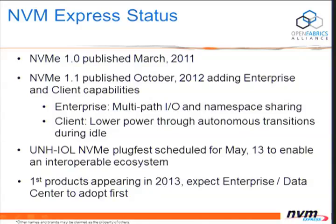NVM Express 1.0 specification was published in March 2011. NVM Express 1.1 was published in October 2012, adding enterprise and client capabilities — on the enterprise side, support for multipath I/O and namespace sharing; on the client side, autonomous power state transitions during use, which lowers power for client systems. We've been working closely with the University of New Hampshire Interoperability Lab, and we plan to have our first plug fest beginning May 13th. A key idea around NVM Express is that it's a standards-based protocol, so we want to deliver interoperable drives — meaning end users can source PCIe SSDs from multiple vendors.